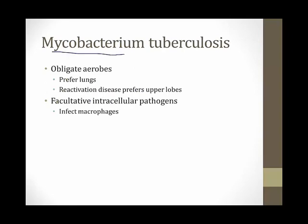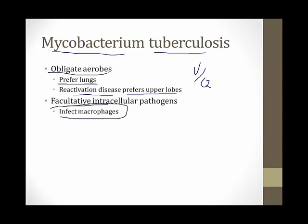Tuberculosis is caused by Mycobacterium tuberculosis. This bug is an obligate aerobe, so it prefers to live in the lungs. In particular, reactivation disease prefers the upper lobes because they have a very high V-to-Q ratio — lots of extra ventilation and oxygen. The tuberculosis bugs like this. These bugs are also facultative intracellular pathogens, meaning they can live inside other cells, and they like to infect and grow inside macrophages.